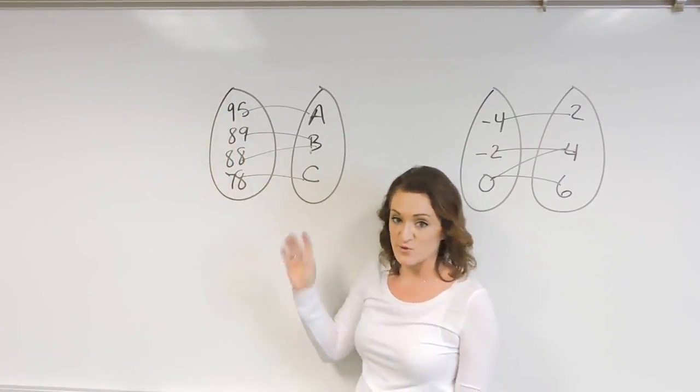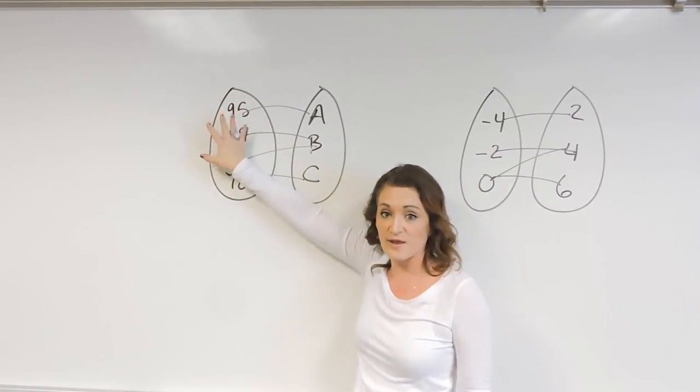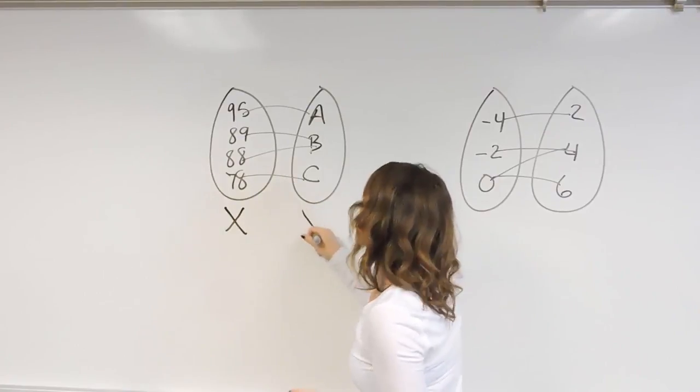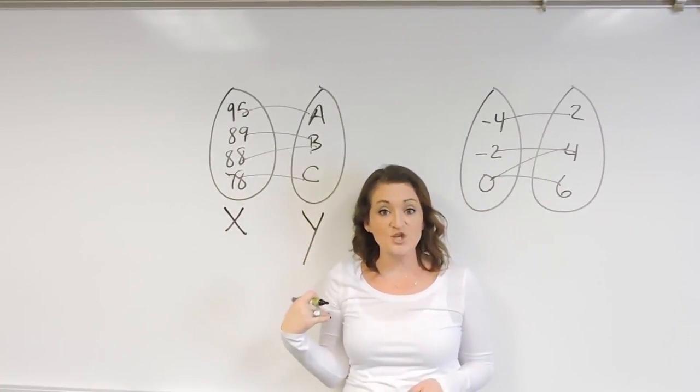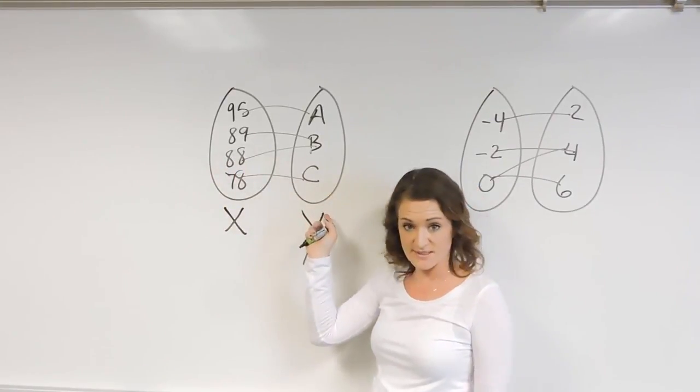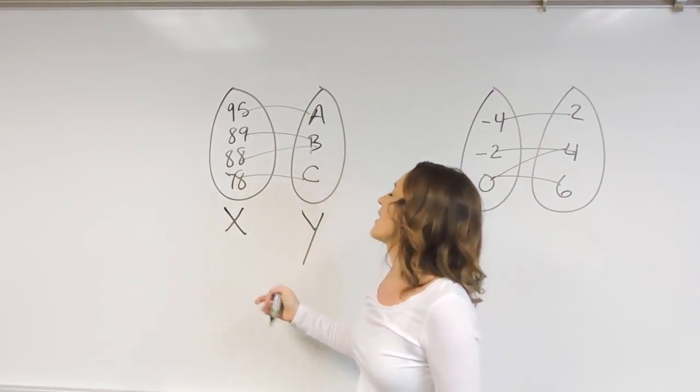So as long as our x values represented by the side over here on the left—think about the left over here as your x values and think about the right side as your y values—as long as I only have one x value that goes to something, then we're good.